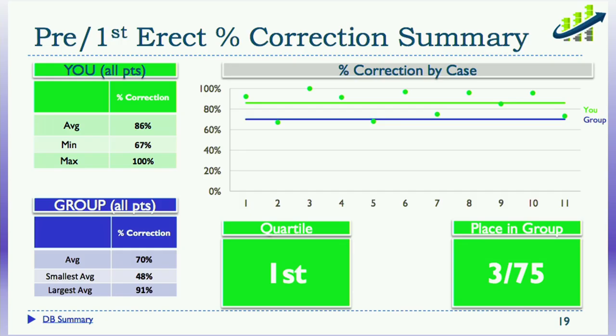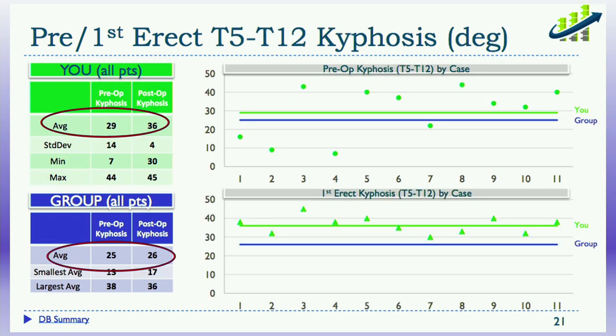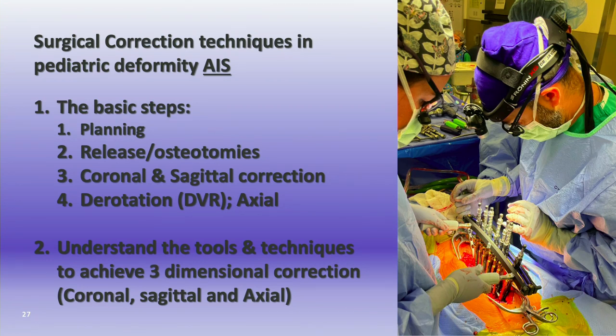We were part of the Setting Scoliosis Straight initiative, so our data is collected against other surgeons and you can benchmark yourself. With this technique we got pretty good correction of the Cobb angle, and we can look at how much kyphosis we create in our group — we're pretty good at increasing kyphosis rather than just maintaining it. So to summarize, we talked about planning of levels, release osteotomies, coronal and sagittal plane correction, and derotating to get axial correction and why that might be important.